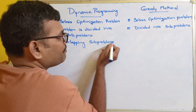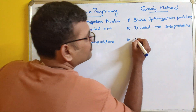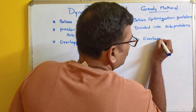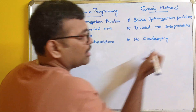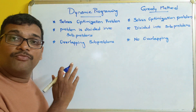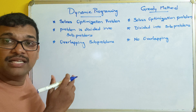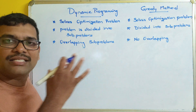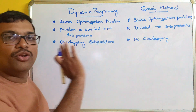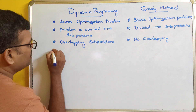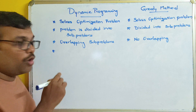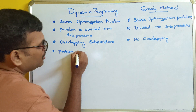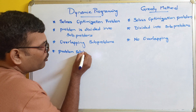In the greedy method, there is no overlapping. That means one subproblem does not depend on another — if you want to solve one subproblem, it does not require the result of another subproblem. There is no overlapping in greedy.